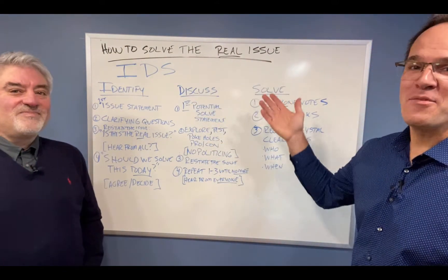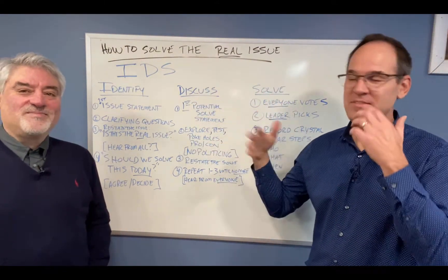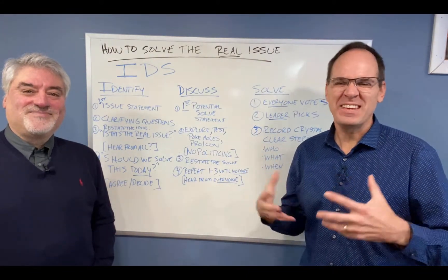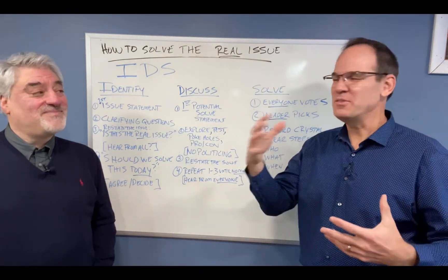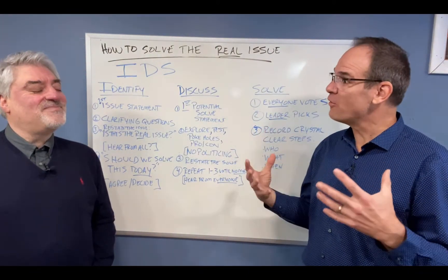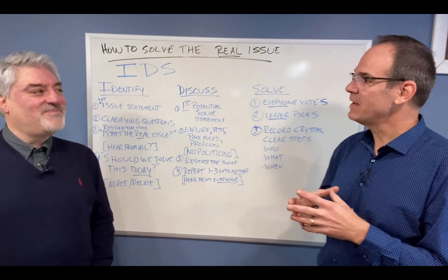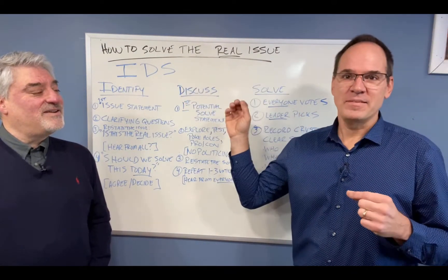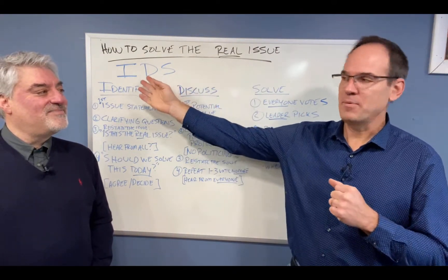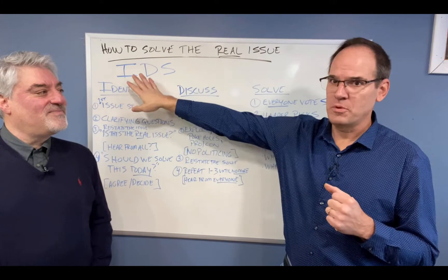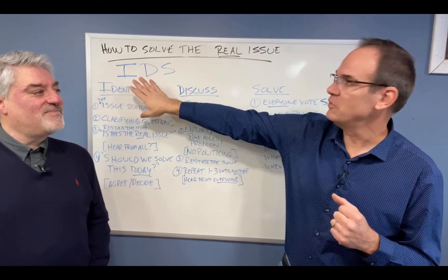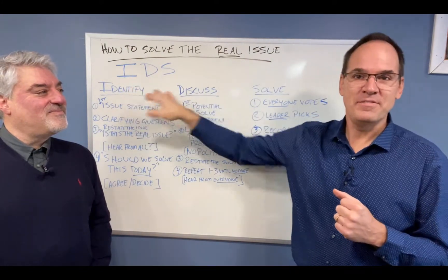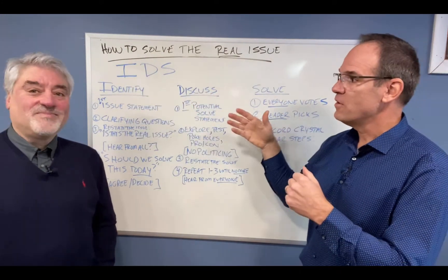So how do we solve a real issue? That round and round — typically you'll find that they're politicking, they're doing things, they're never actually solving anything. IDS is the term that the EOS operating system — the Entrepreneurial Operating System — uses. IDS: Identify, Discuss, and Solve.